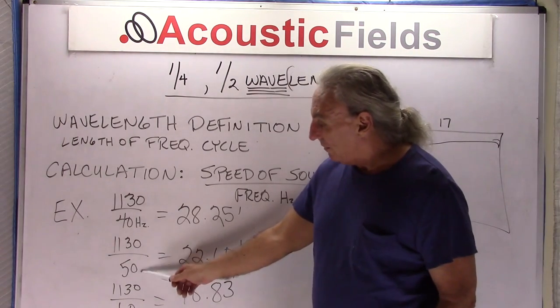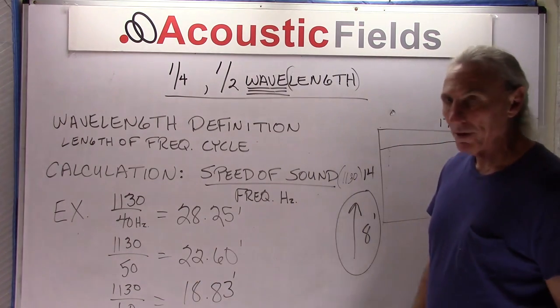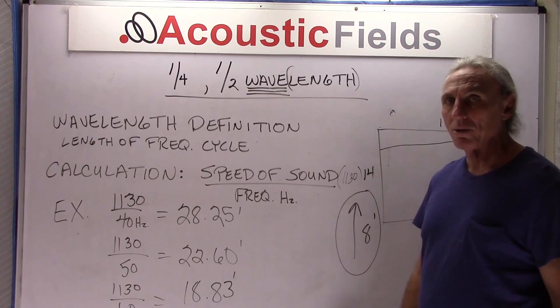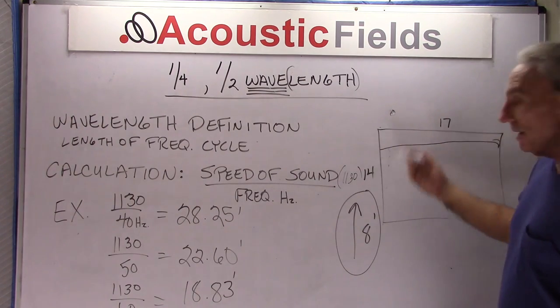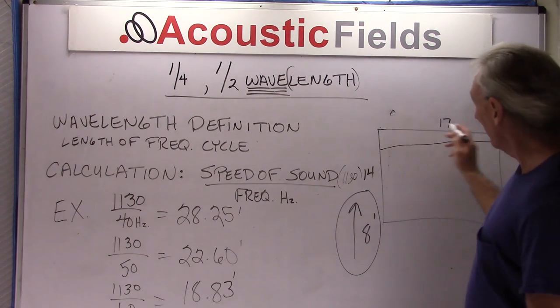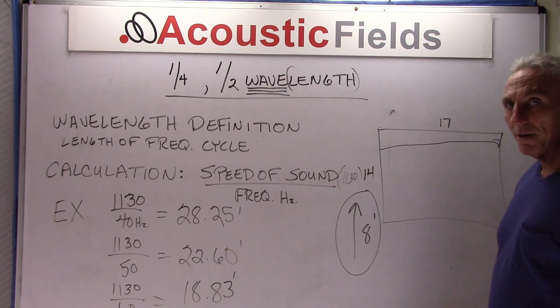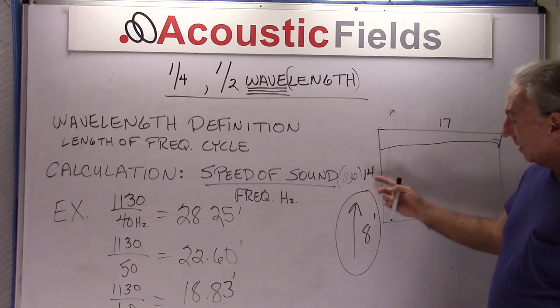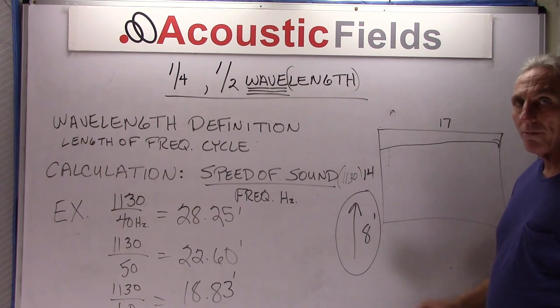A 50 cycle wave, same process. 1130 feet per second, we get about 22 and a half feet. Same question. How is 22 and a half feet going to fit in your 17-foot long room, 14-foot wide room, and 8-foot tall room? It's not. It's going to cause issues.